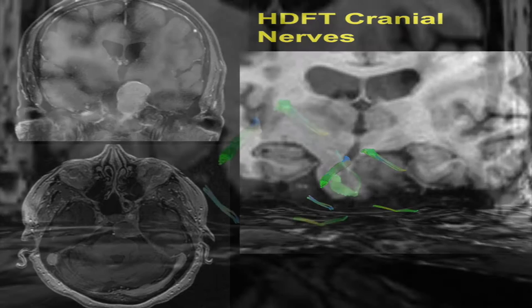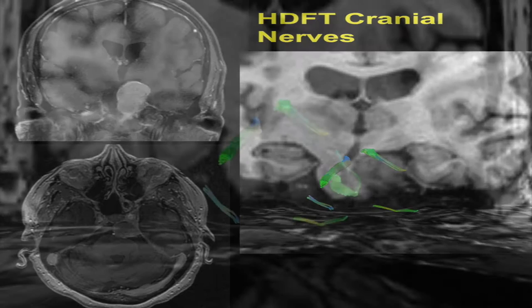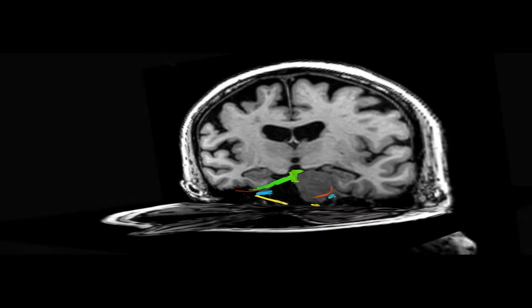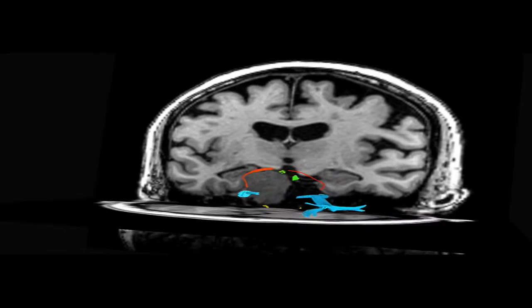We perform preoperative fiber tracking, showing displacement of the oculomotor nerve superiorly and medially, and of the sixth nerve inferiorly. Sixth nerves here are in yellow, while third nerves are in green, and fourth nerves are in red.